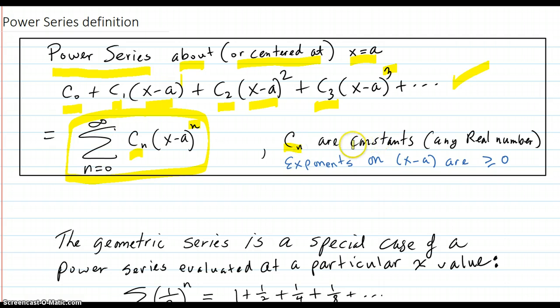The c_n are constants, any real number, and the exponents on the (x minus a) terms are greater than or equal to zero.